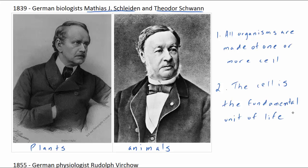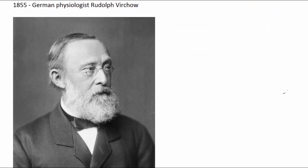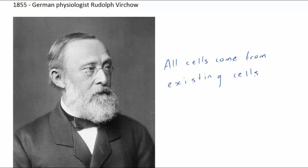German physiologist Rudolf Virchow added a third component to the cell theory in 1855 when he proposed that all cells came from pre-existing cells. This idea contradicted spontaneous generation. When the French chemist and microbiologist Louis Pasteur finally disproved spontaneous generation in 1859, he provided additional evidence in support of cell theory.